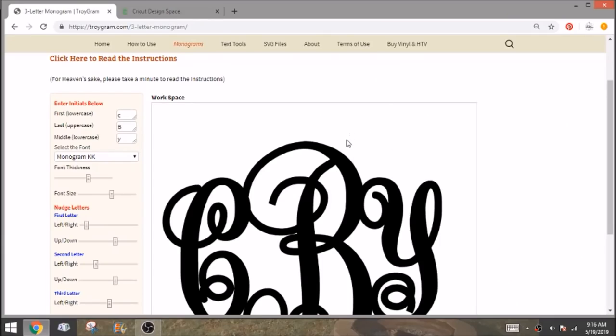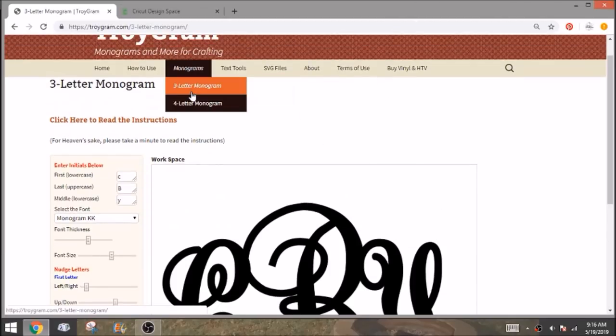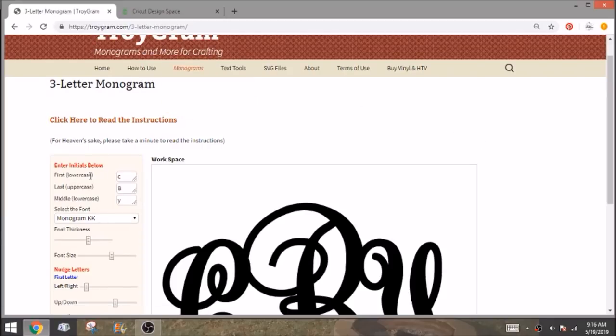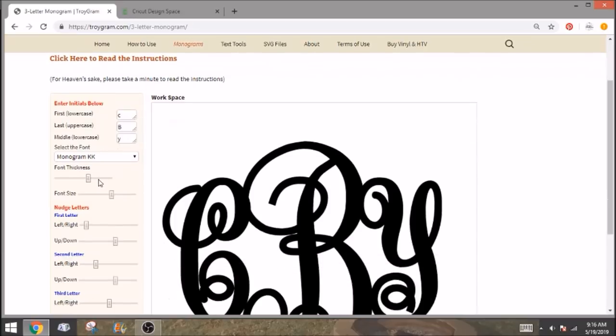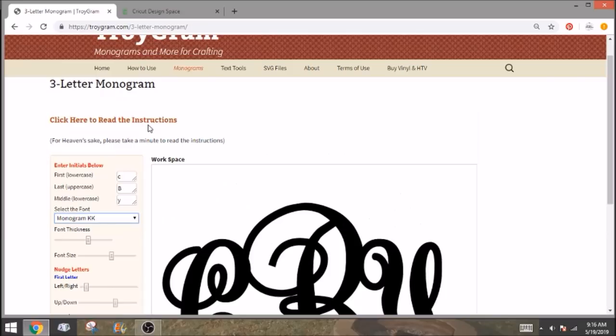I'm going to show you guys another way that we can do a monogram. Super quick, super easy, and you can thicken the font if you want. So I've gone to troygram.com and I went to monograms and three-letter monogram. And this walks you through it. It's really easy to use. So your first initial would be C for mine. The last initial you do in uppercase is a B and your middle initial in lowercase. And then you can select the font. Now the one thing you need to make sure is that you do have these fonts downloaded to your computer or they will not load through his website. There are directions here on how to find each of the fonts he has loaded.